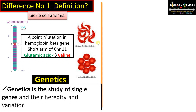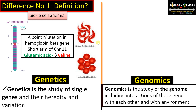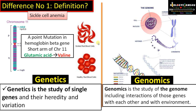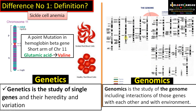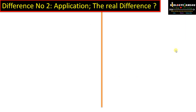The study of single genes and their associated effects, heredity, and variation can be called genetics. Whereas genomics is a study of the entire genome, including interactions of those genes with each other and with the environment. Genomics is a multi-gene study including all genes — for example, genes associated with obesity — and their interactions with the environment.